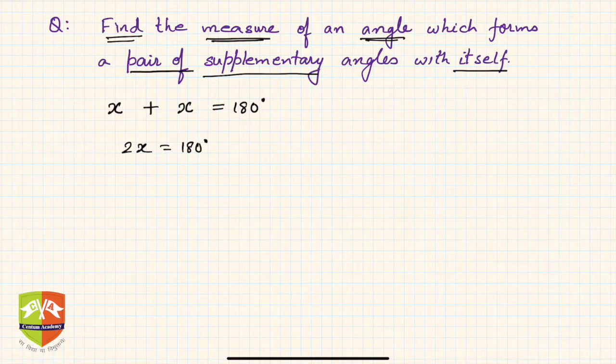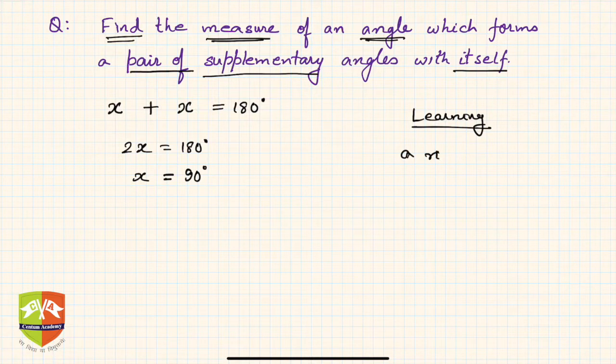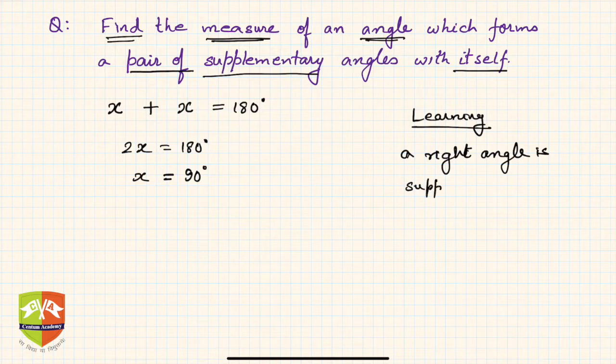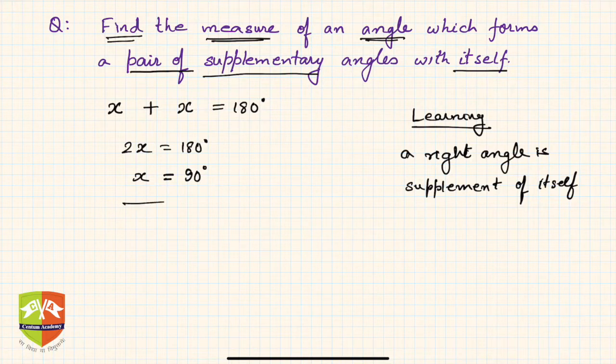So what is x guys? X is 90 degrees. So remember, the learning is: a right angle is supplementary to itself, the right supplement of itself, because if you add right angle to a right angle we'll get 180 degrees. That's how you solve the problem.